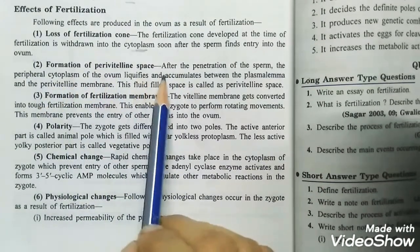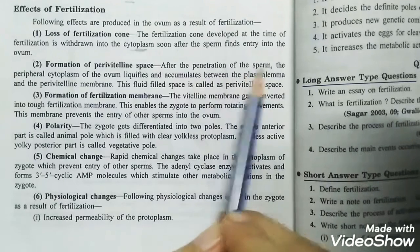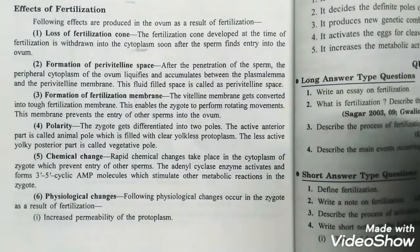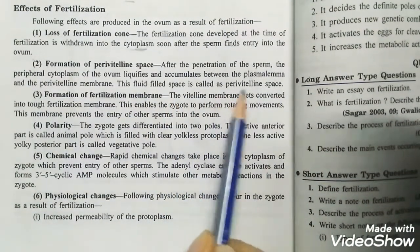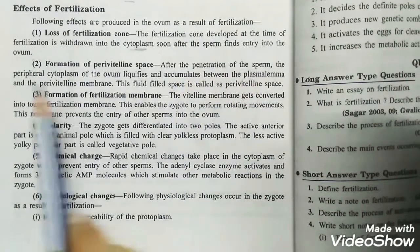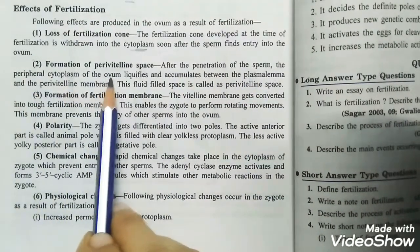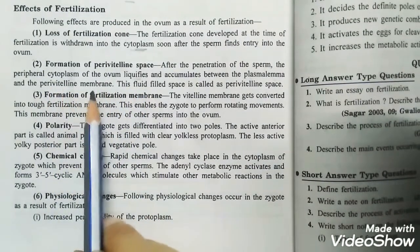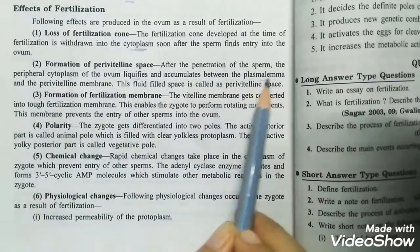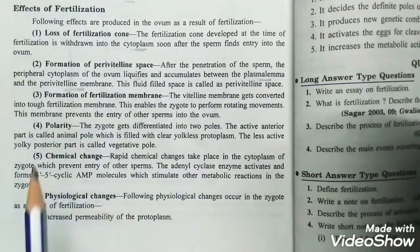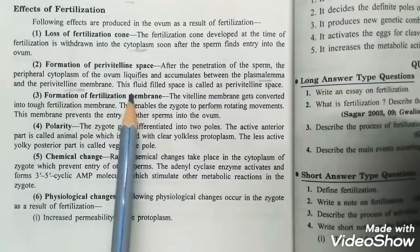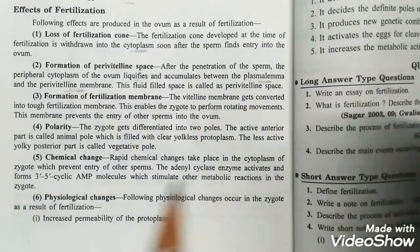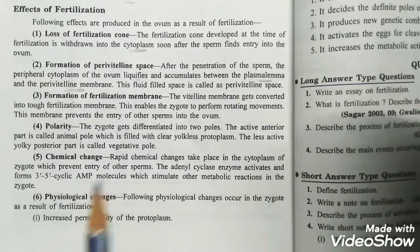The second effect is the formation of the perivitelline space. After the penetration of the sperm, the peripheral cytoplasm of the ovum liquefies and accumulates between the plasmalemma and the vitelline membrane. This fluid-filled space is known as the perivitelline space. The fluid which fills this space is known as perivitelline fluid.